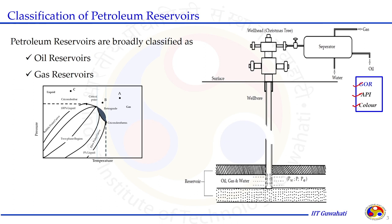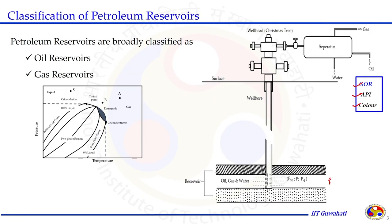GOR measures the amount of oil and gas produced at the separator. Color and degree API are associated with the liquid production, meaning oil production. What exactly happens in this system is that we have very high reservoir pressure underneath the surface, and fluid travels from reservoir to the surface. It encounters several temperature and pressure zones, because of which the phase may change depending on the conditions it meets. That is why it becomes important to understand the PVT behavior of the fluid.